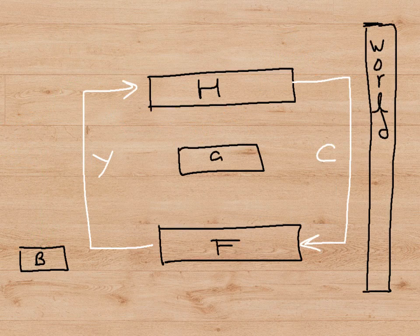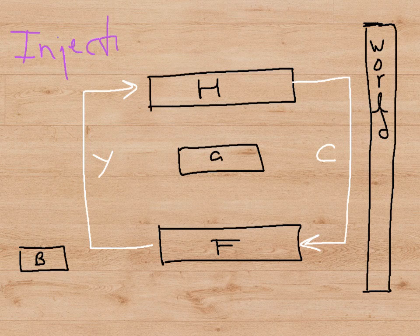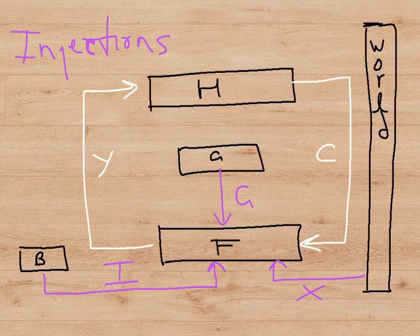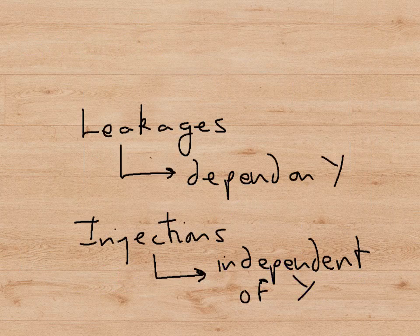Of course, if only three leakages happened, all our money would leak away and we would have no money flowing around the circular flow. So we have to have three ways for money to be injected back in — injections. The first injection is when banks lend money to firms and firms spend it on capital equipment, which we call investment spending. Governments also spend money collected from households in tax, which is also an injection. And finally, the outside world buys goods made in this economy, which is called exports.